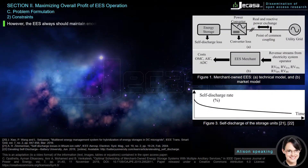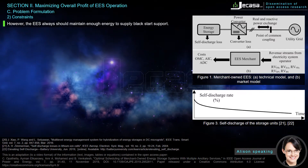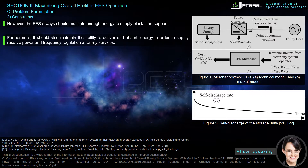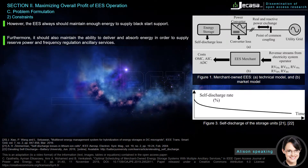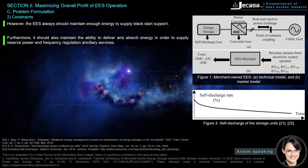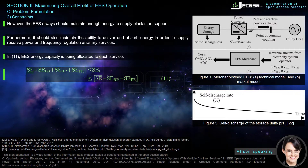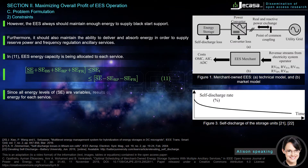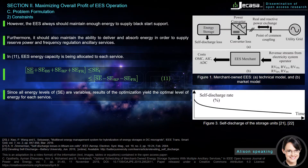However, these services should always maintain enough energy to supply black start support. Furthermore, the EES should also maintain the ability to deliver and absorb energy in order to supply reserve power and frequency regulation ancillary services. In equation 11, EES energy capacity is allocated to each service. Since all energy levels S_E are variables, the optimization yields the optimal level of energy for each service.